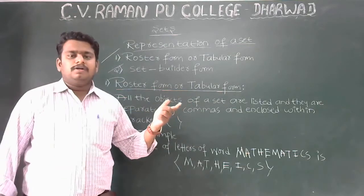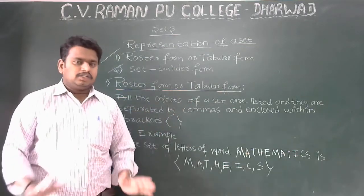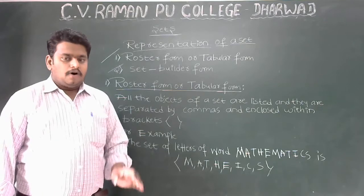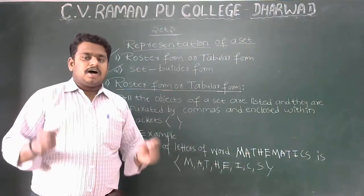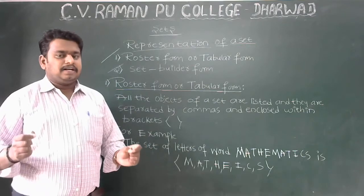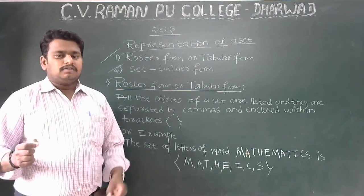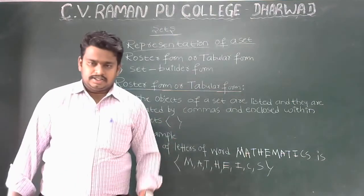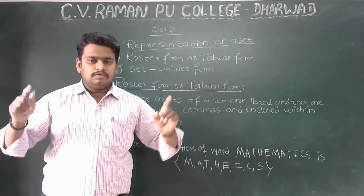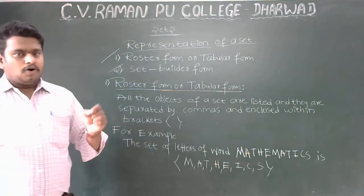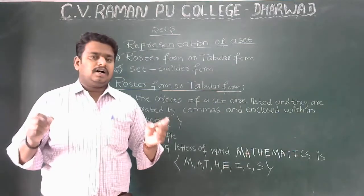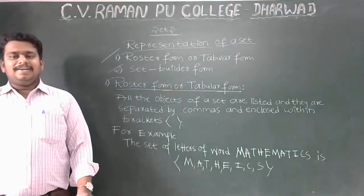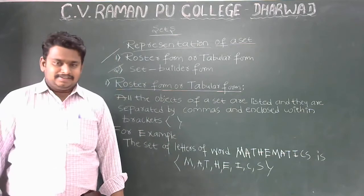In the roster form (or tabular form), all the objects of a set are listed, they are separated by commas, and enclosed within brackets.